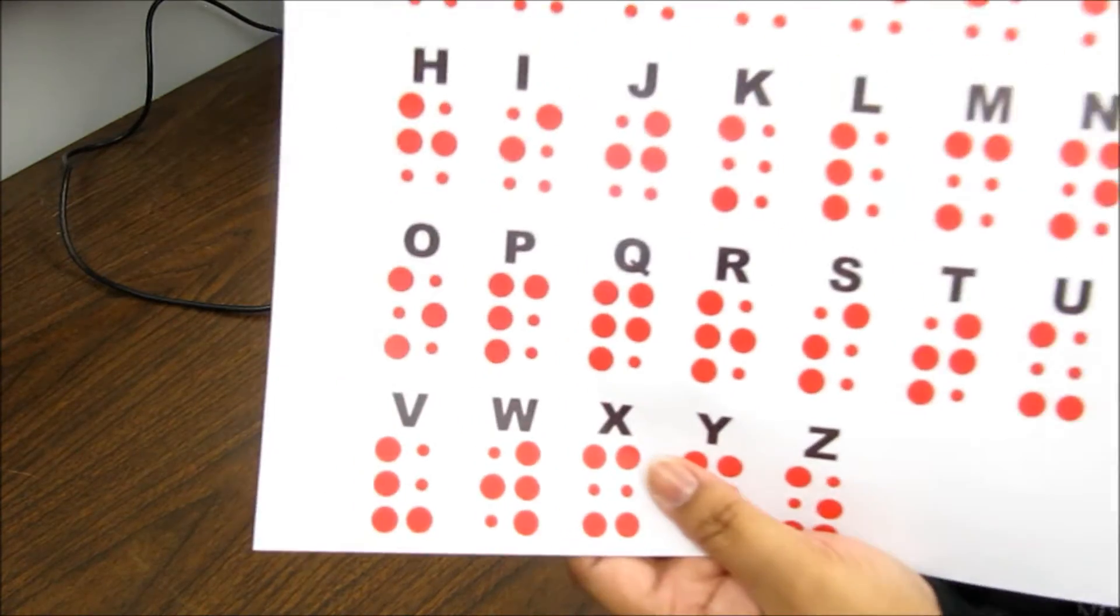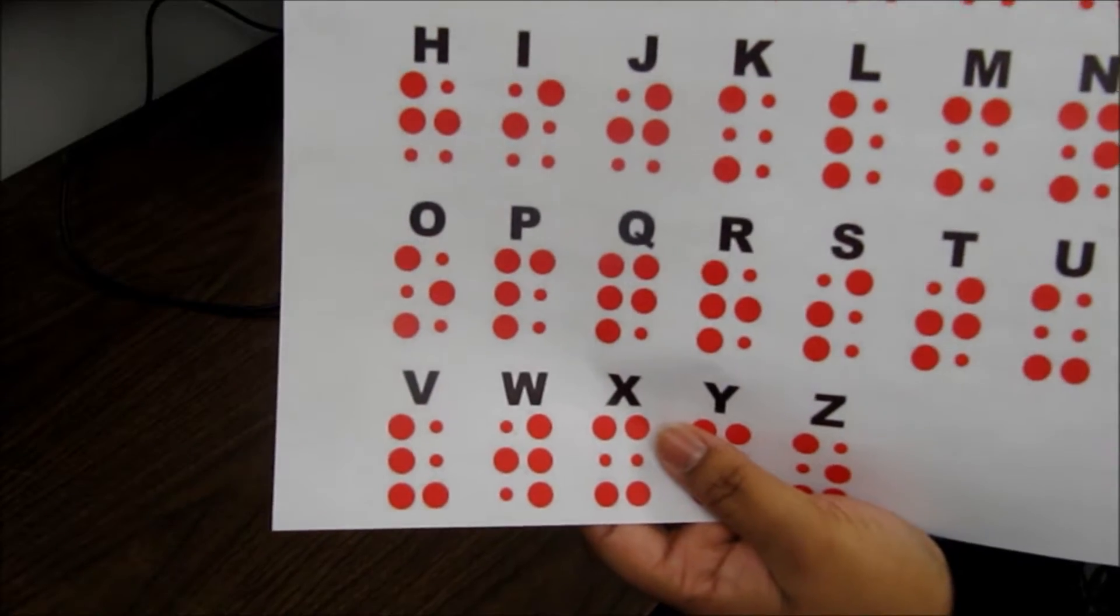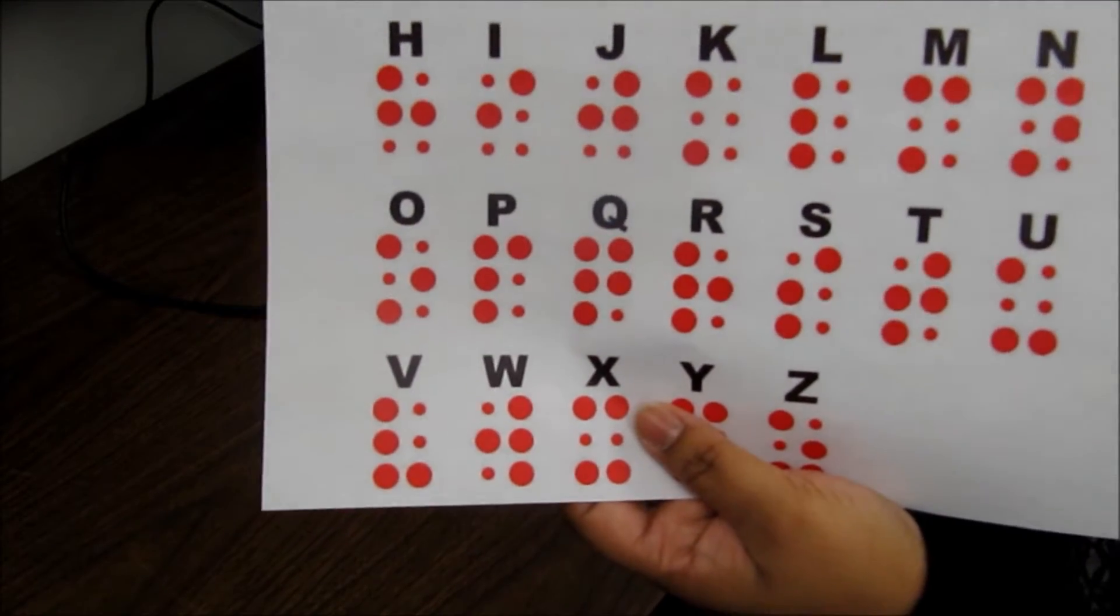For example, this sheet shows the English Braille alphabet. The dots that are larger represent a dot that would be raised on the page.